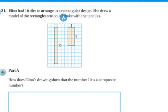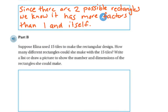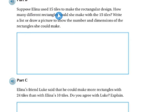Elena has 10 tiles to arrange in a rectangular design. She drew a model of rectangles that she could make with 10 tiles. She did 1 times 10 and 2 times 5. How did Elena's drawings show that 10 is a composite number? Since there are two possible rectangles, we know that it has more factors than 1 and itself.